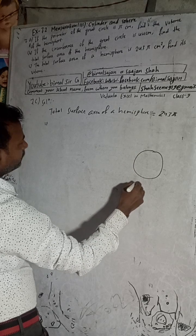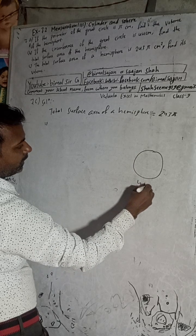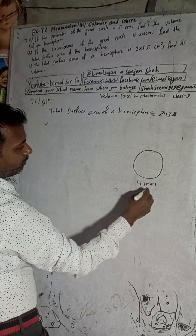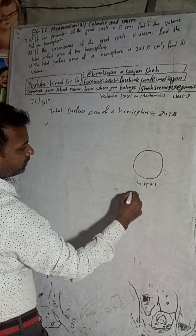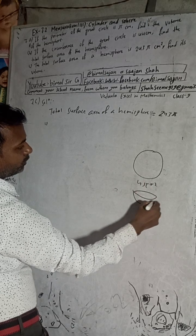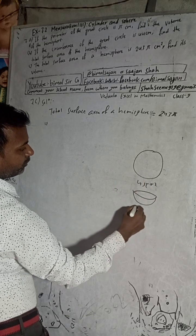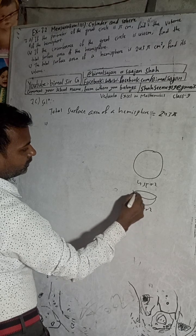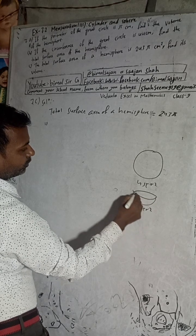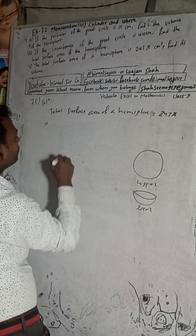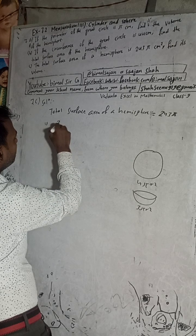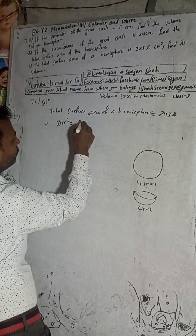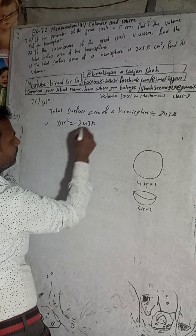The total surface area of a full sphere is 4πr squared, but for a hemisphere the total surface area will be 3πr squared, because we have to include the flat circular base as well. So we set 3πr squared equal to 243π.